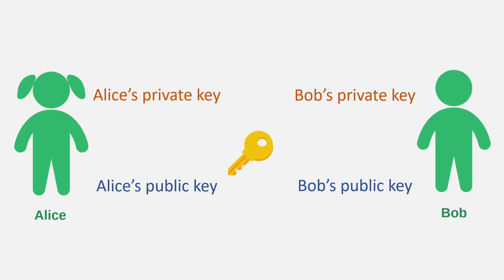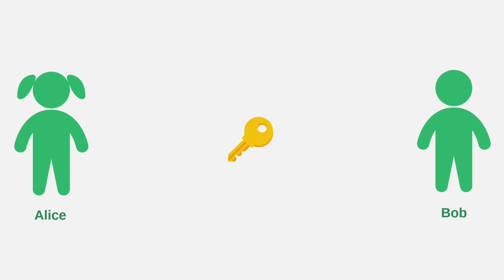To derive the shared key, Alice uses her private key with Bob's public key, while Bob uses his private key with Alice's public key. Because the underlying function is symmetric, both arrive at the same key.